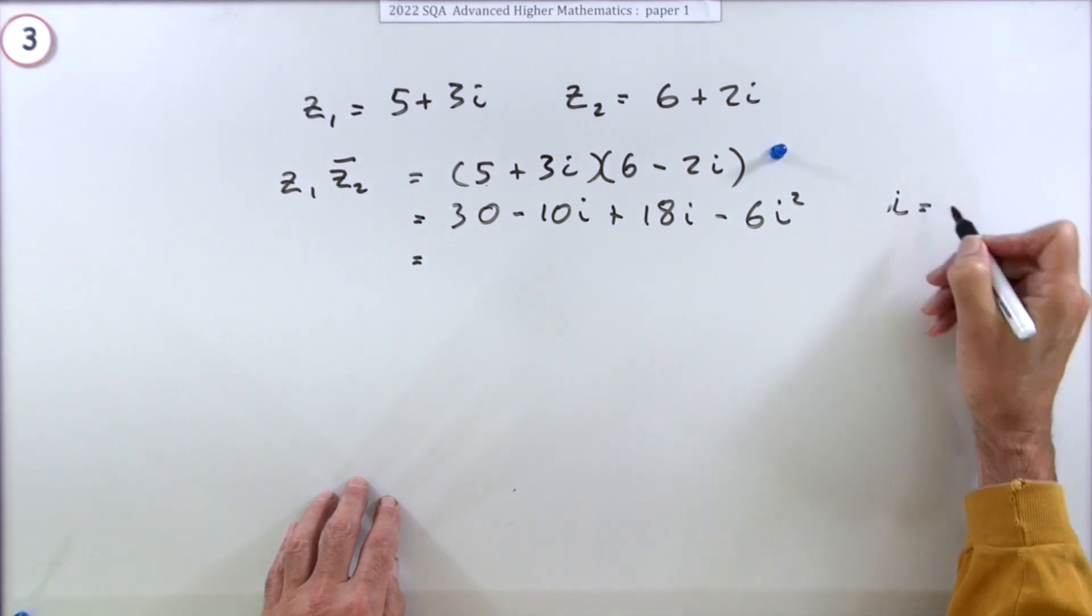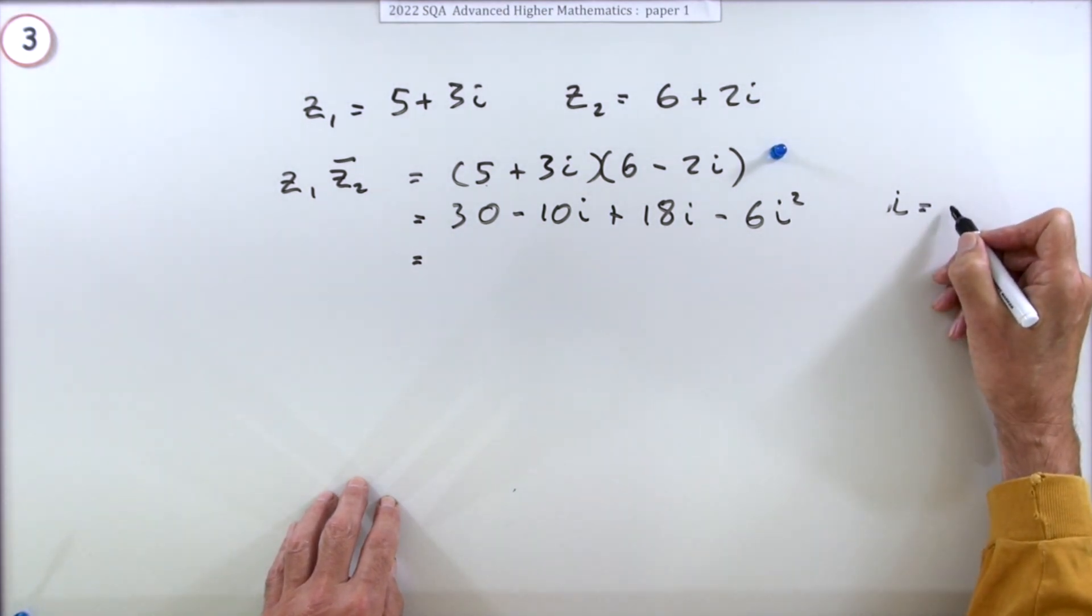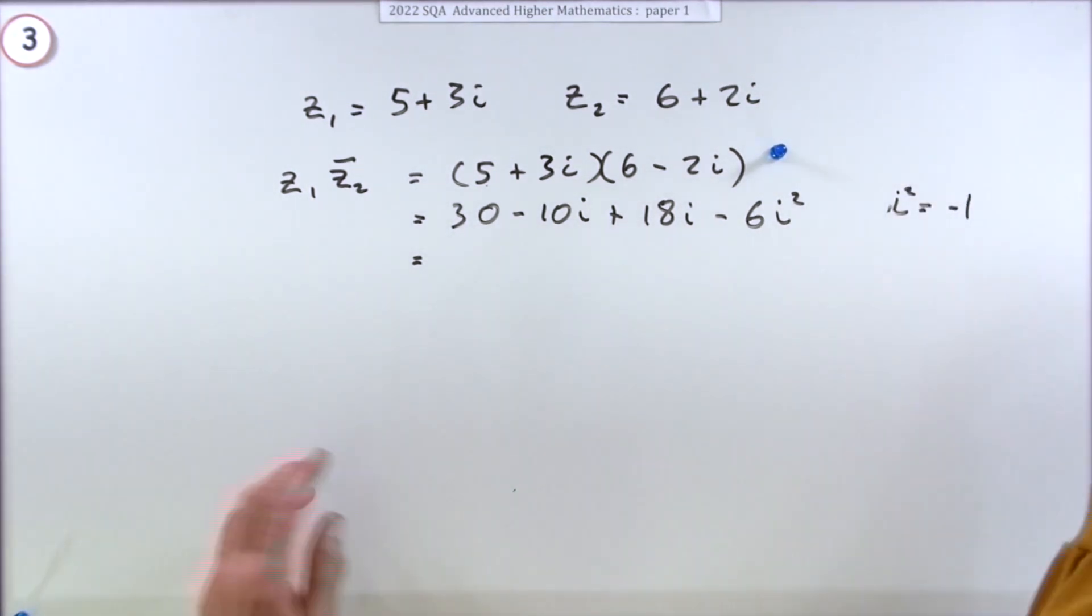Now you know that i is the square root of negative one, so i squared must simply be negative one.